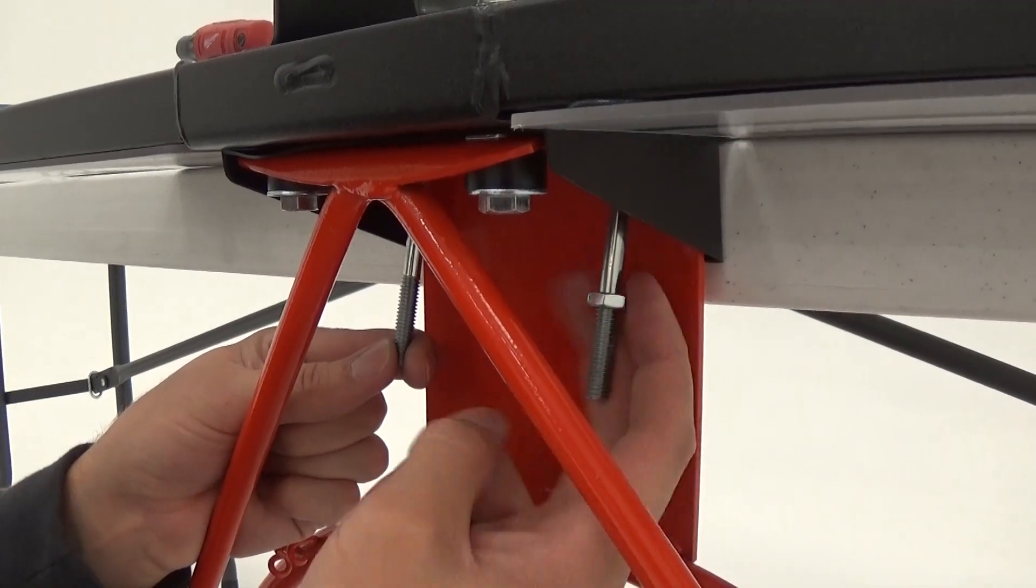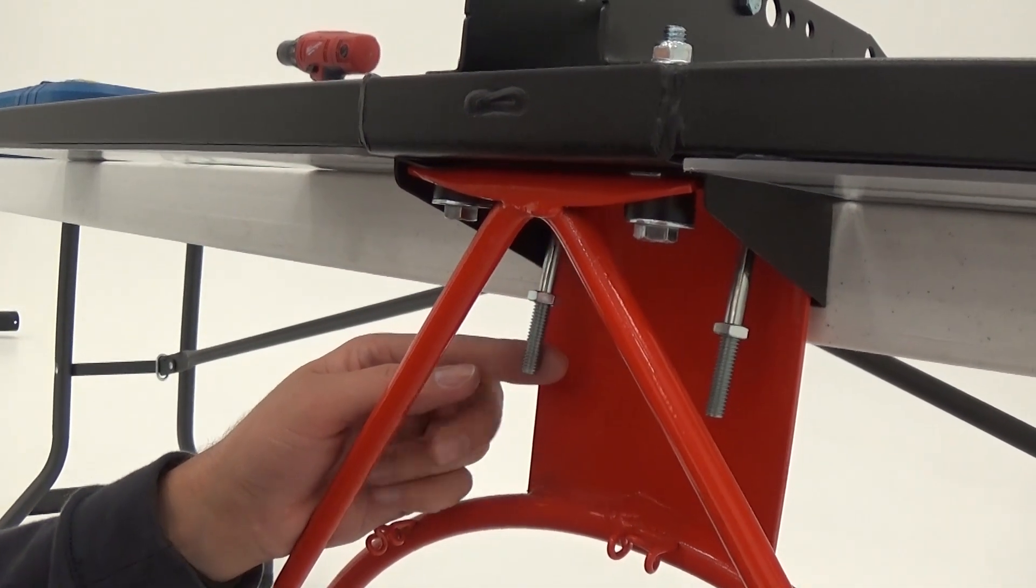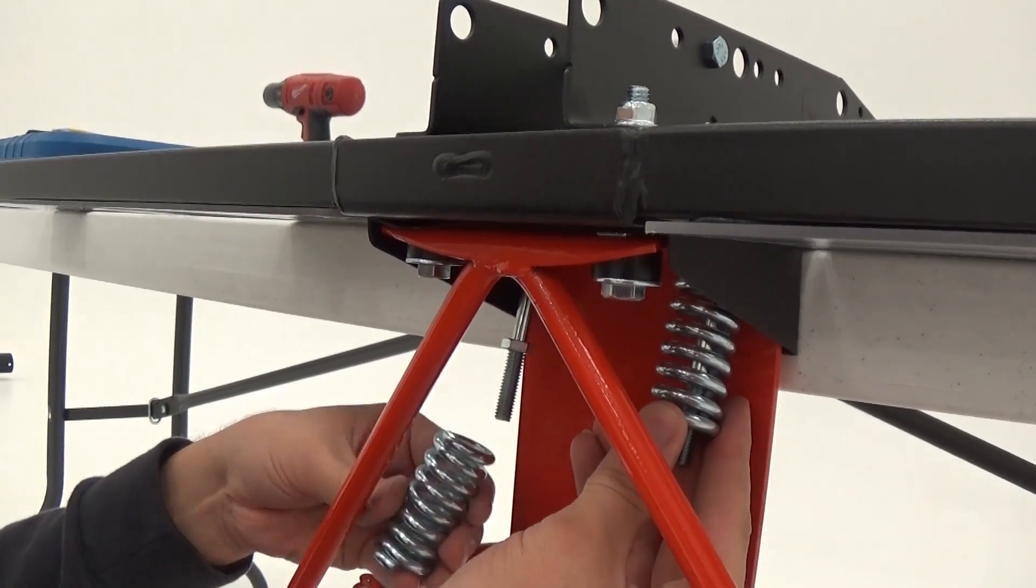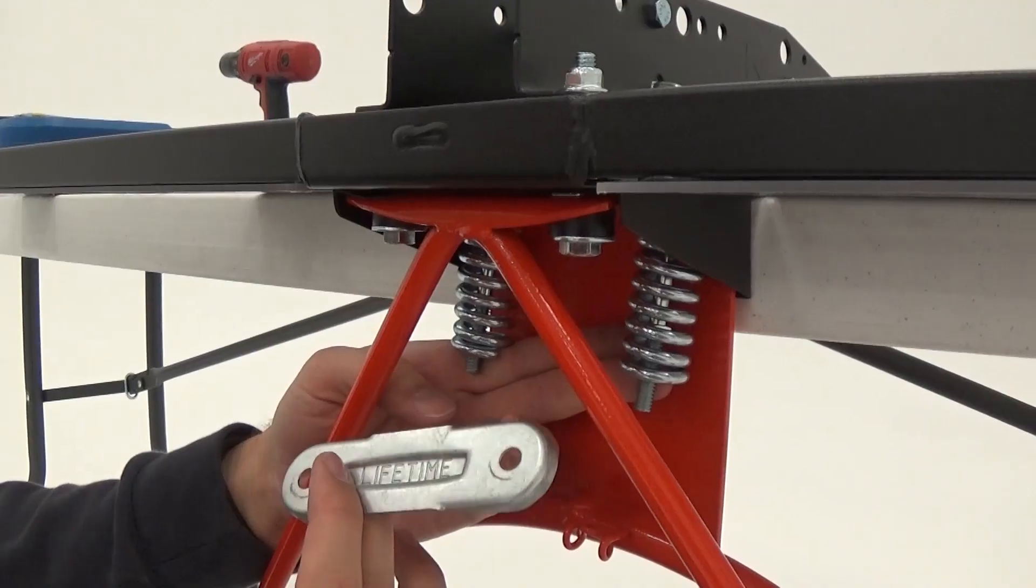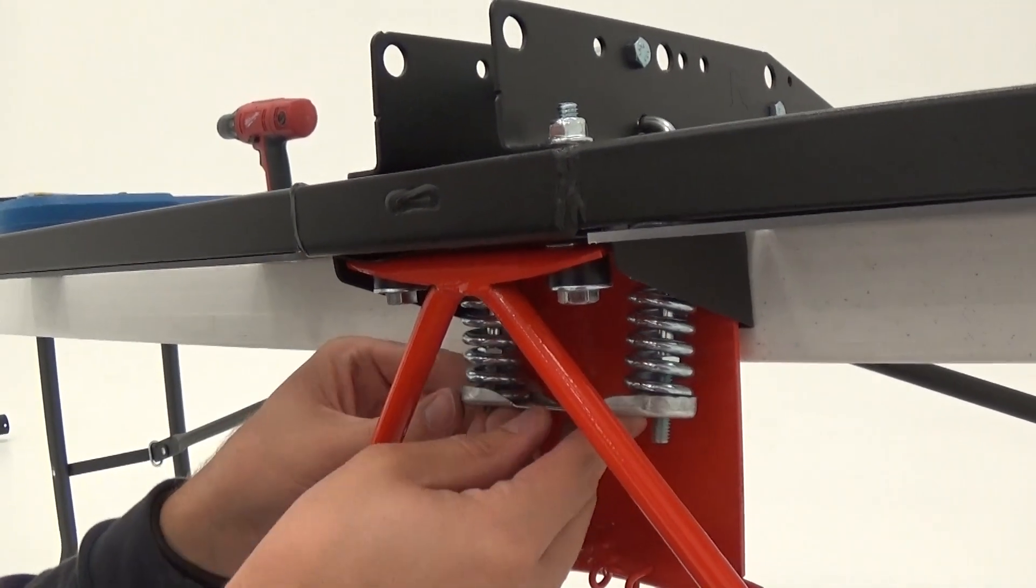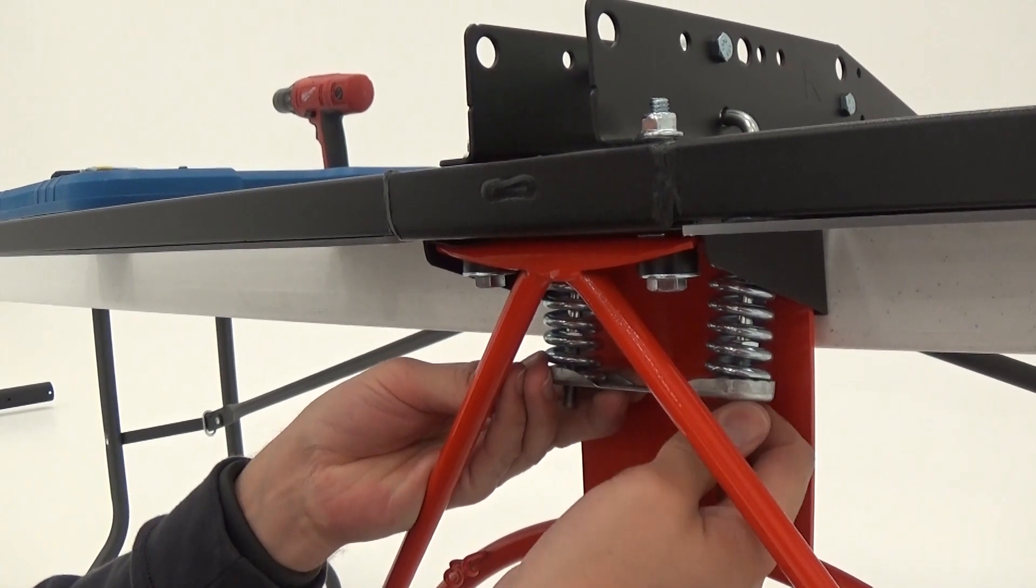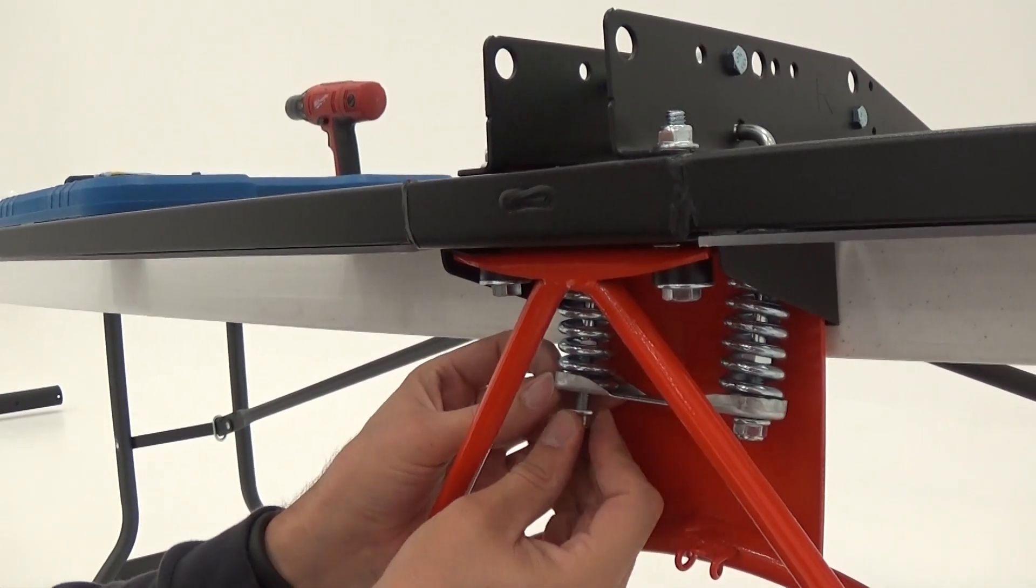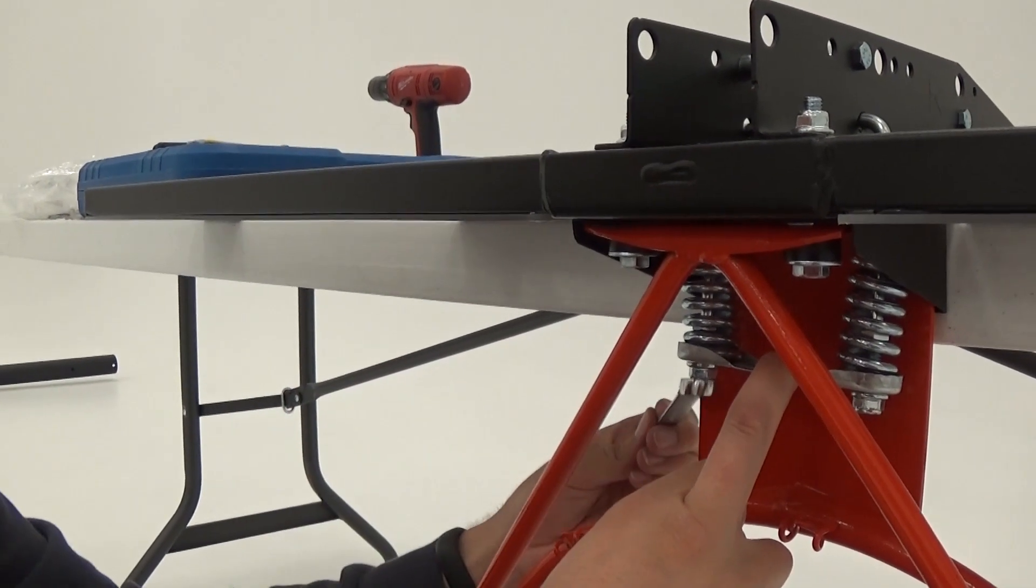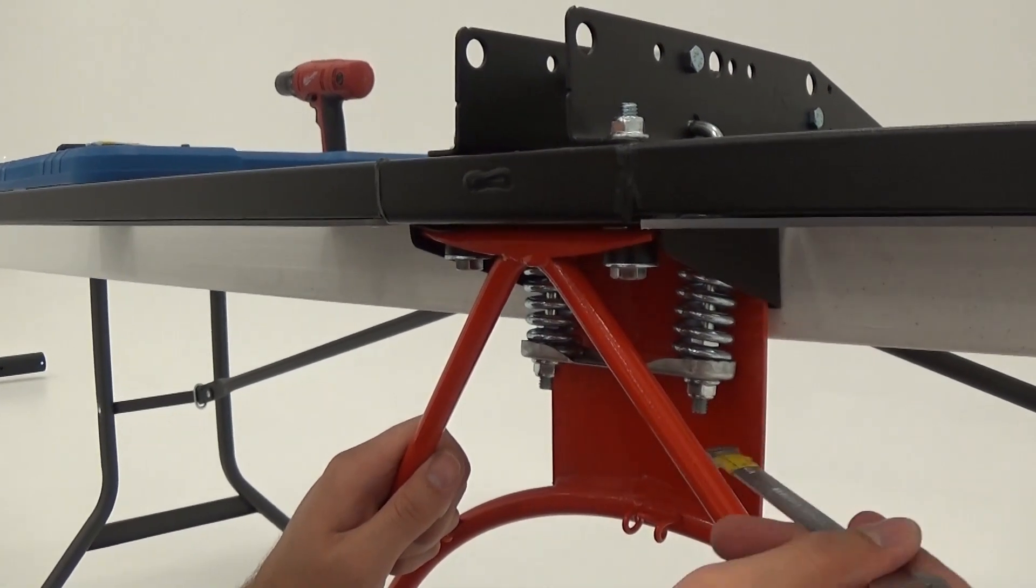On the front of the backboard, thread the jam nuts onto the U-bolt as far as they will go. Then slide the compression springs onto the U-bolt and secure them with the spring retainer plate and the hardware provided. Make sure not to completely tighten the hardware here as the flange nuts are used to adjust the rim tension.